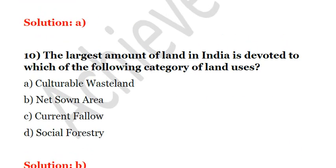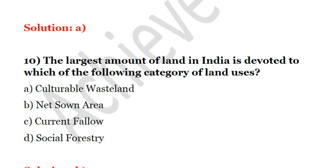The last question: the largest amount of land in India is devoted to which category of land use? A. Culturable wasteland. B. Net sown area. C. Current fallow. D. Social forestry. The answer is B — net sown area, which is quite high in India.